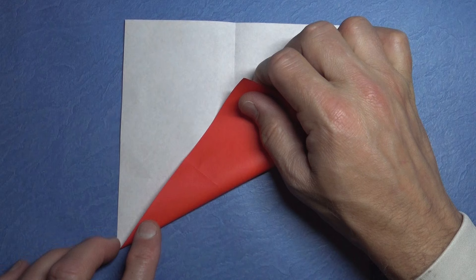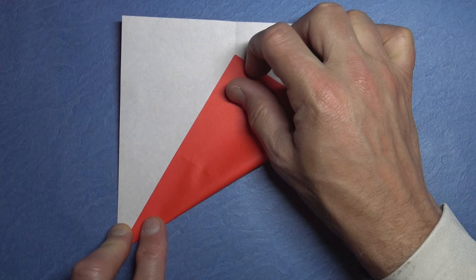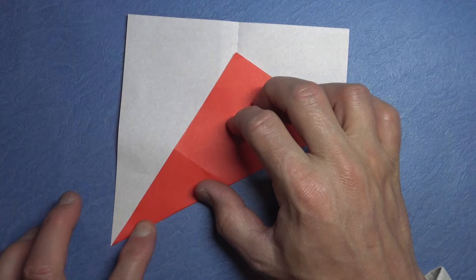Rotate, and now fold this corner so that it touches the crease, and we want the fold to originate at this corner, and we want the corner to land perfectly on that crease, so it's like this. Crease that sharply.